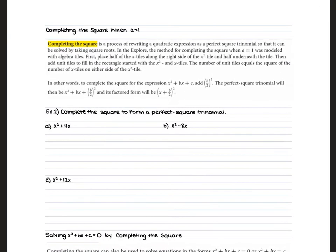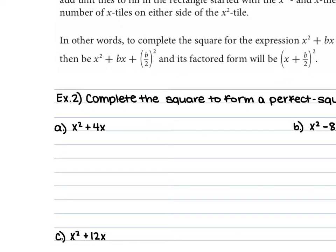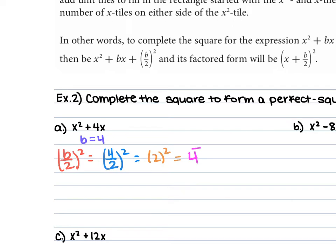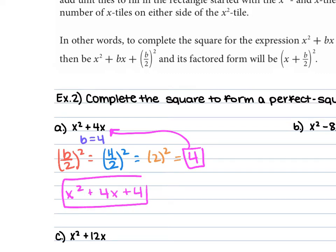For our next set of examples, we're completing the square to form a perfect square trinomial — same process. For example a, our b is 4. So b over 2 squared: 4 over 2 squared. 4 over 2 is 2, and 2 squared is 4. So we plug this in to give ourselves x squared plus 4x plus 4, and that is our perfect square trinomial.